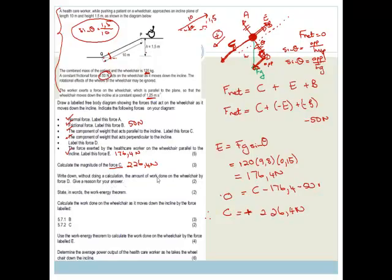Now it says: write down without doing any calculation the amount of work done on the wheelchair by force D. Give a reason for your answer. So we're looking at the force of gravity perpendicular to the surface. The answer is zero work done, because the force is perpendicular to the direction of movement. In order for work to be done, the force has to be parallel to or in the same plane as the direction of movement.